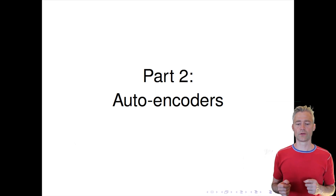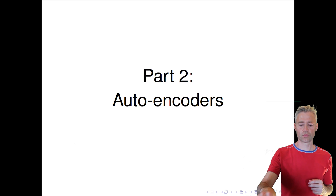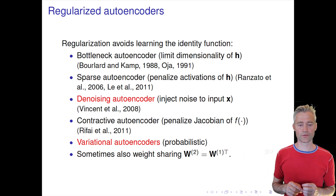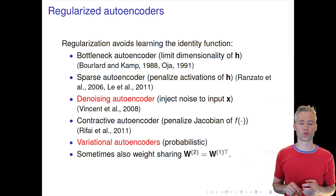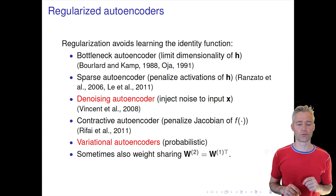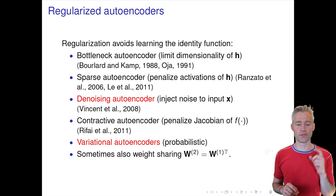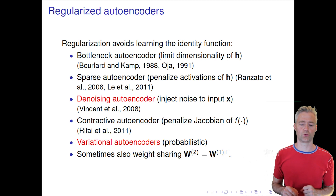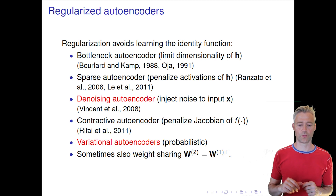So the second part, we'll talk about autoencoders. Here is a list of particularized autoencoders. We will concentrate on two different types: the denoising autoencoder and the variational autoencoder.